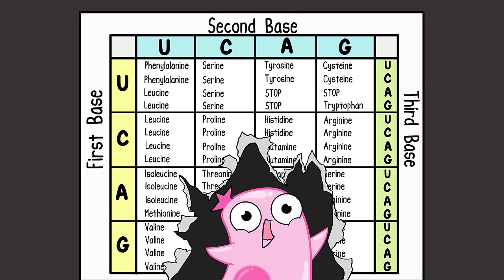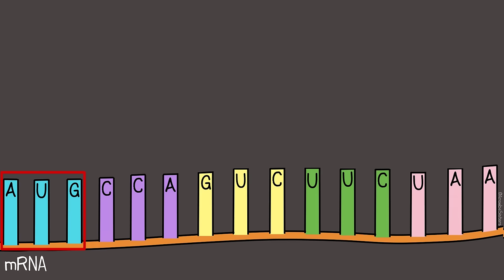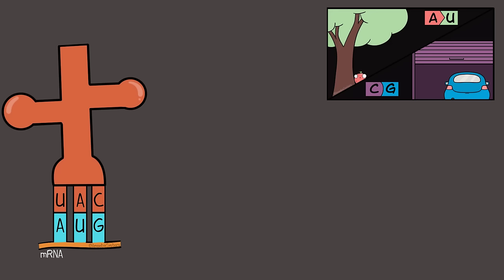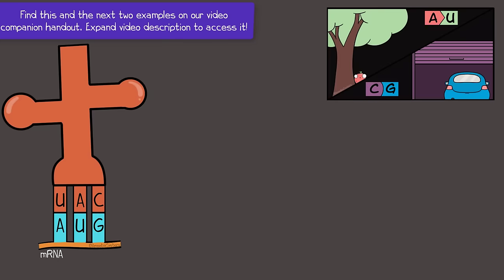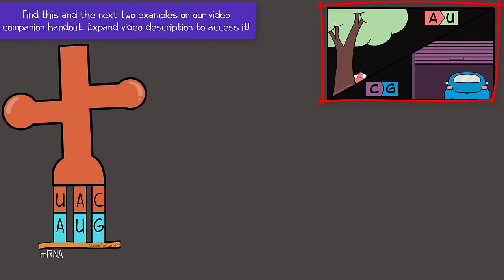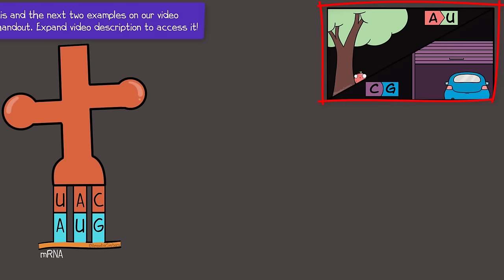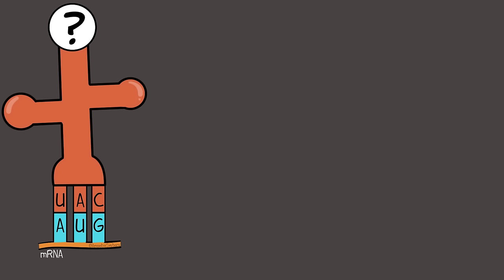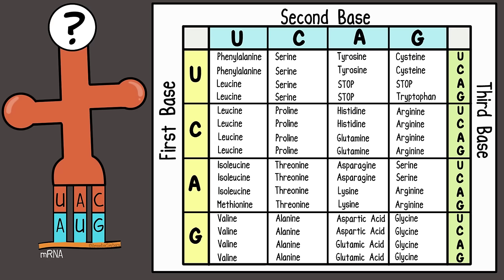The most common ways are the rectangular codon chart and the circular codon chart. Let's get started. The first codon—remember, codons have three bases and codons are on the mRNA—is AUG. That means the tRNA anticodon will be UAC, and we know that because of the base pairing rules. Now which amino acid will that tRNA carry? Time to use the codon chart.